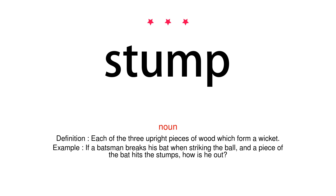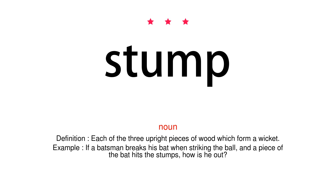Noun. Definition: Each of the three upright pieces of wood which form a wicket. Example: If a batsman breaks his bat when striking the ball, and a piece of the bat hits the stumps, how is he out?